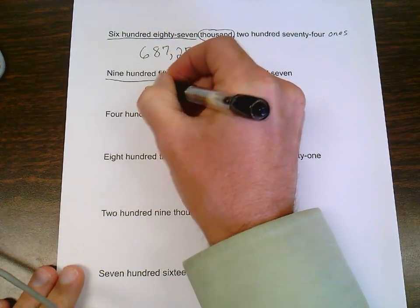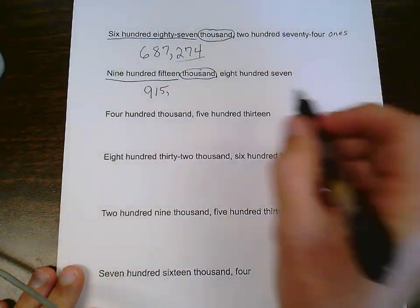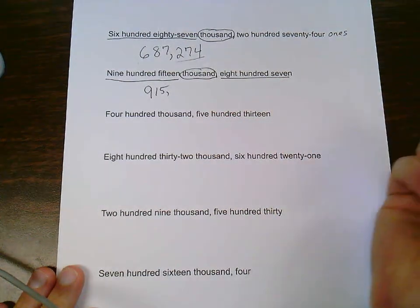915, comma, because that splits the periods apart. 807 in the ones period.